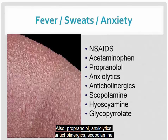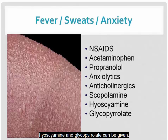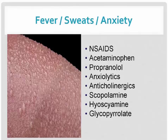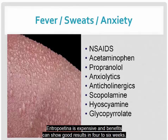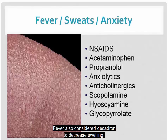Also, propranolol, anxiolytics, anticholinergics, scopolamine, hyoscyamine, and glycopyrrolate can be given. Fatigue not relieved by rest can be incapacitating, which could be from decreased oxygen, anemia, anxiety, or depression. Erythropoietin is expensive, but benefits can show good results in four to six weeks. Fever: also consider Decadron to decrease swelling. About 5% of cancer patients have tumor-induced fever and sweating; a tumor protein may act as an endogenous pyrogen on the hypothalamic temperature regulators, and a patient can lose up to half a liter of fluid a day.